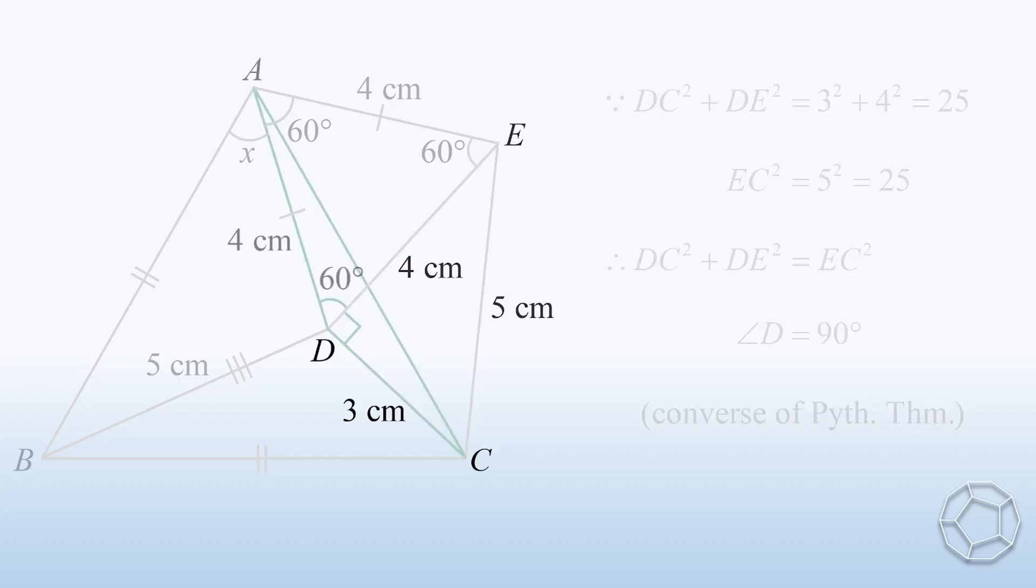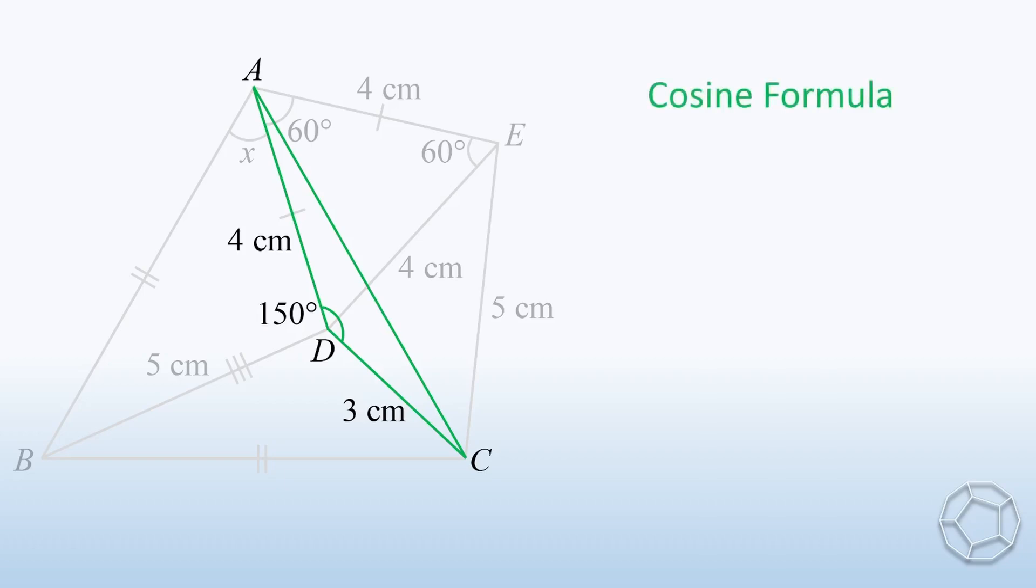At this moment, we just need one more triangle. In the green triangle, angle D is equal to 150 degrees. Together with two sides, we can apply cosine formula to find the length of AC. So AC squared is equal to 25 plus 12 times square root 3.